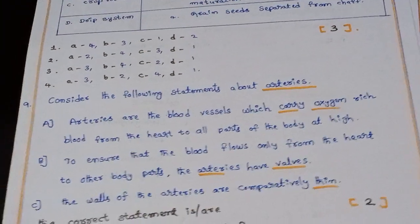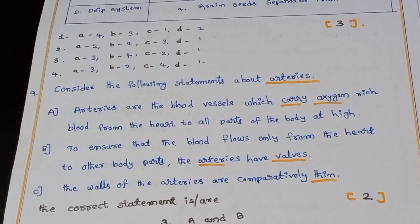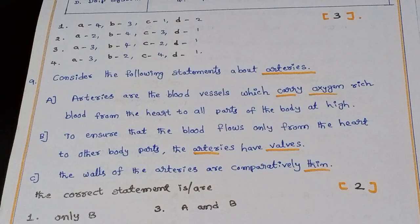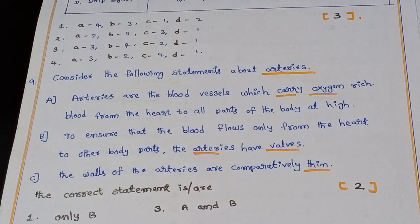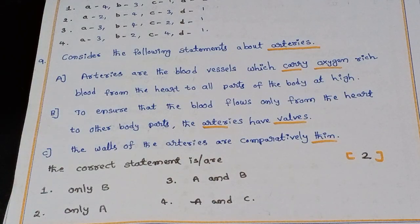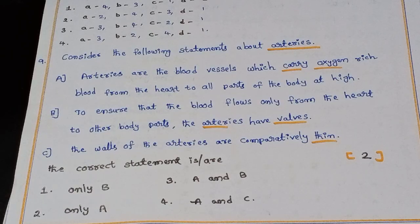Ninth question: Consider the following statements about arteries. A: arteries are blood vessels which carry oxygen-rich blood from the heart to all parts of the body. B: valves ensure that blood flows only from the heart to other body parts — the arteries have valves. C: the walls of the arteries are comparatively thin. Only statement A is correct — option two is the right answer. Statement B about valves and statement C about thin walls do not correctly describe arteries.